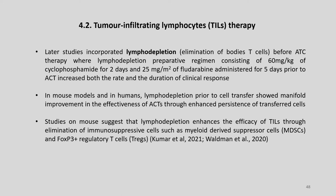Later studies incorporated lymphodepletion—elimination of host T cells before ACT therapy—where a lymphodepletion preparative regimen consisting of 60 mg/kg of cyclophosphamide for 2 days and 25 mg of fludarabine administered for 5 days prior to ACT increased both the rate and the duration of clinical response. In mouse models and in humans, lymphodepletion prior to cell transfer showed marked improvement in the effectiveness of ACTs through enhanced persistence of transferred cells and elimination of immunosuppressive cells such as myeloid-derived suppressor cells and FOXP3+ regulatory T cells.